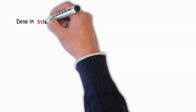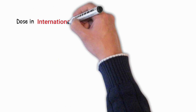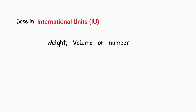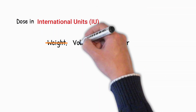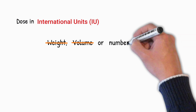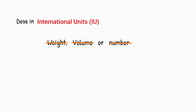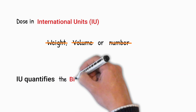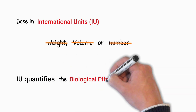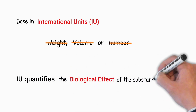Expressing the dose of drugs in international units does not tell us anything about the weight, volume, or number of molecules of the drug. Instead, the international unit is a way to quantify the biological effect of the medication.